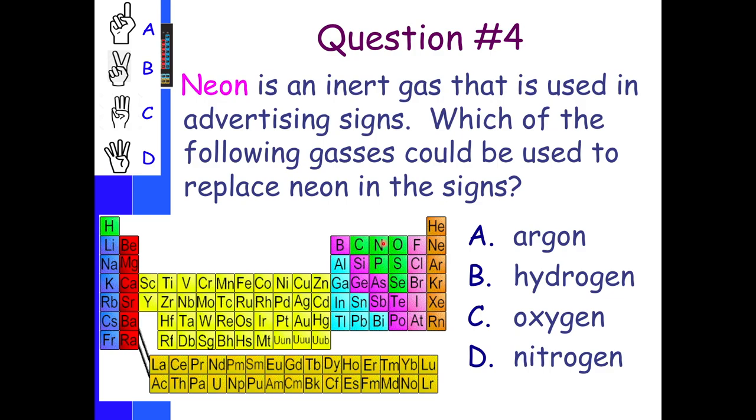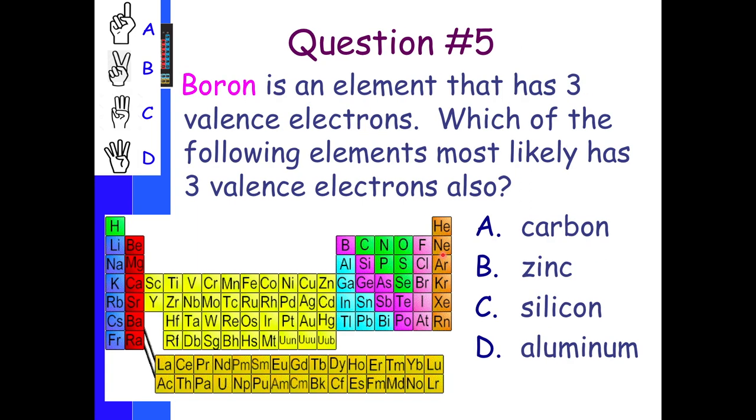And then question four. Neon is an inert gas that is used in advertising signs. Which of the following gases could be used to replace neon in the signs? Is it going to be argon? Here's neon. Is it going to be argon, hydrogen, oxygen, or nitrogen? Oh, you guys got me. It's going to be argon. Again, because it's a similar property.